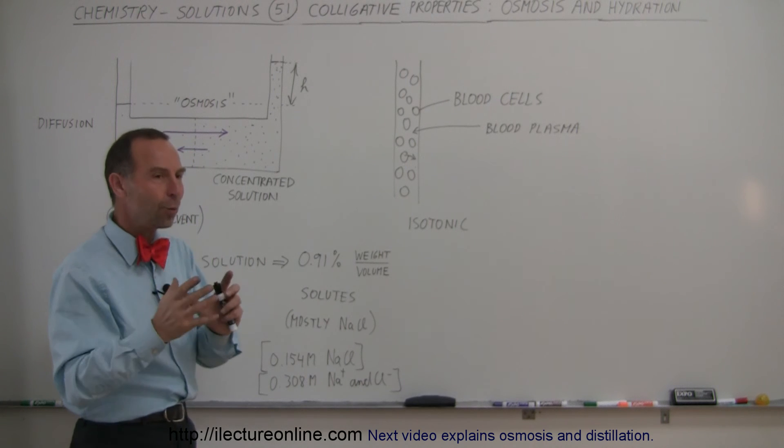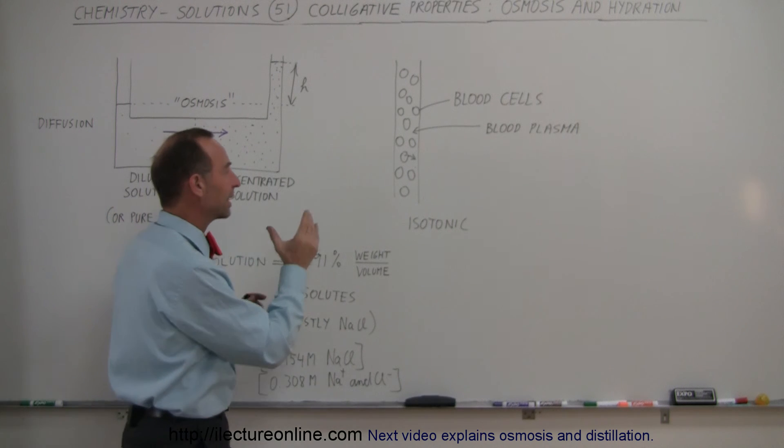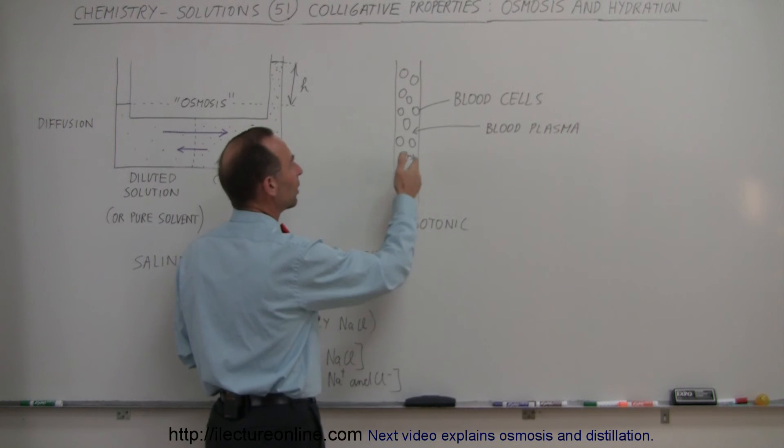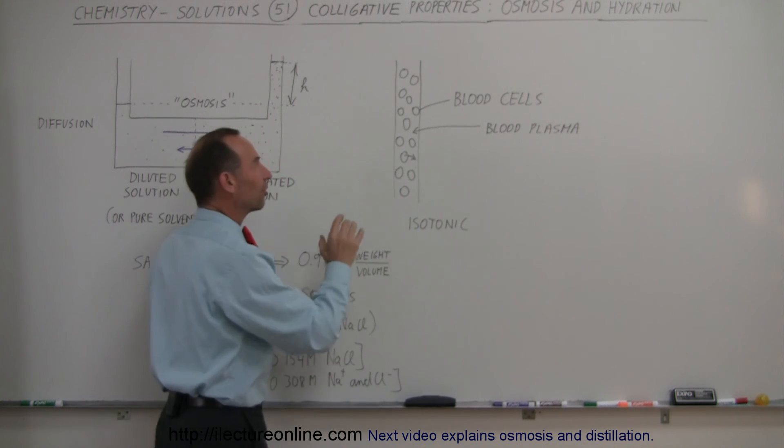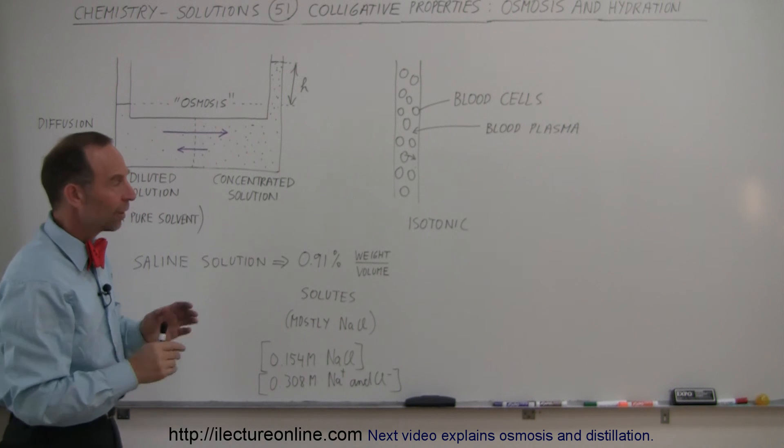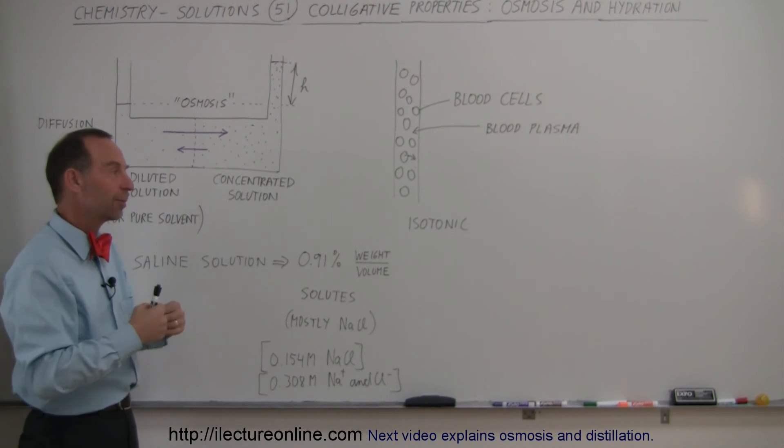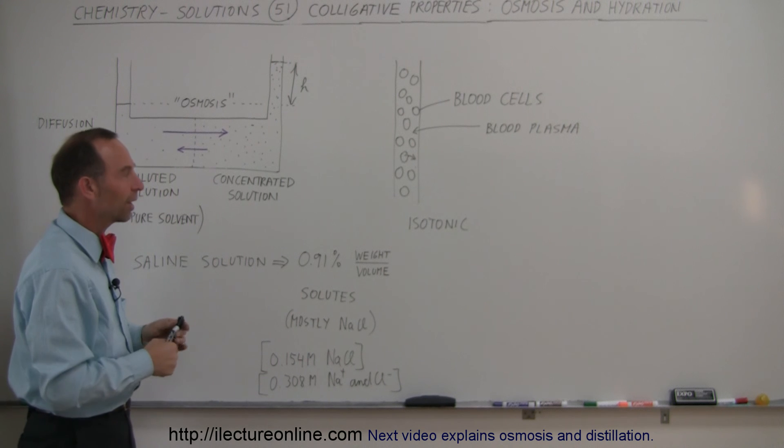Your body always works very hard to get to an isotonic state between the blood plasma and the blood cells, all due to osmosis. Once any one of those systems gets out of whack, the body does its best and makes you thirsty to drink more water.